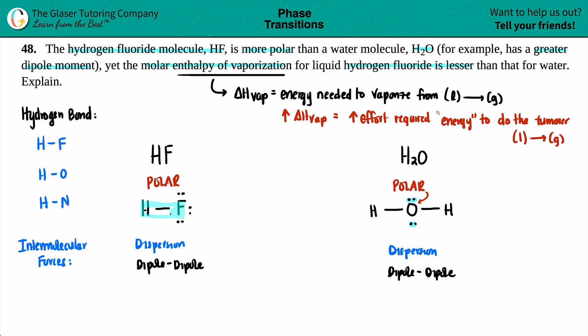So this molecule HF obviously has hydrogen bonding. And on here, you also have an OH bond for water. So that also has hydrogen bonding.